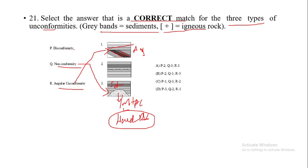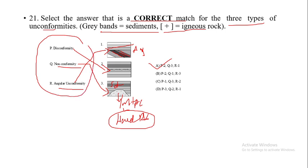Finally, the remaining diagram represents disconformity. So the answer is option A: two, three, and one. We need to keep the definitions of all three unconformities in mind, correlate them with the given figures, and conclude the answer.